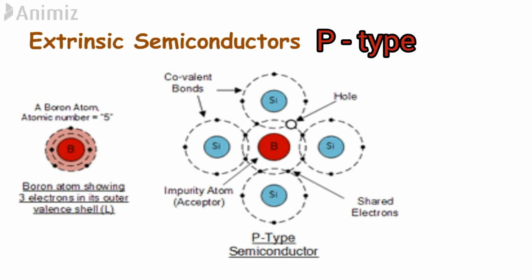And also adding of impurity will provide millions of holes. Therefore the number of holes generated in this structure dominate the electrons. So the hole's concentration is greater than that of the electron concentration. So this structure is called the p-type structure.